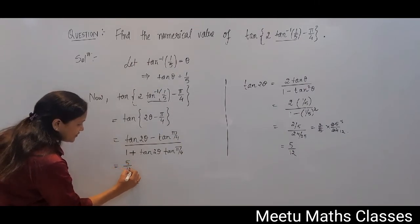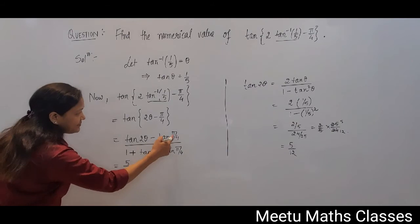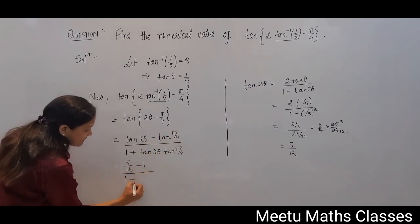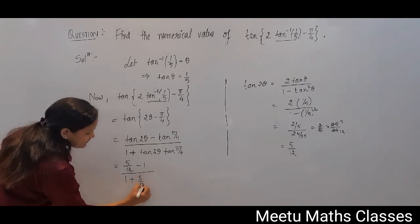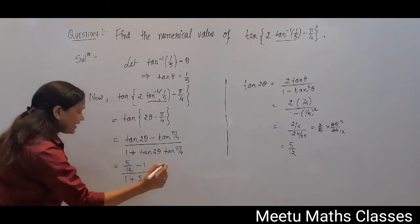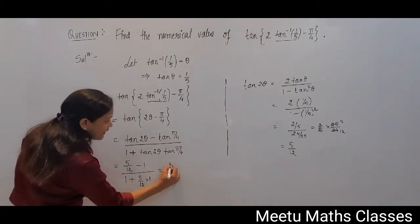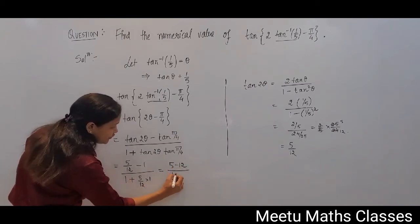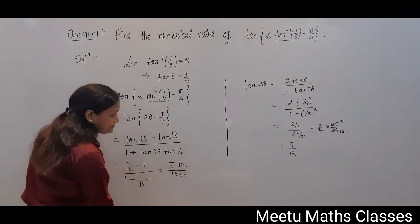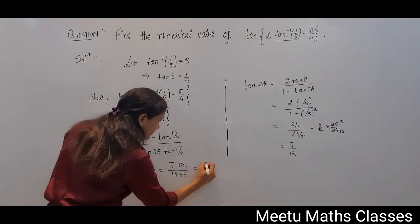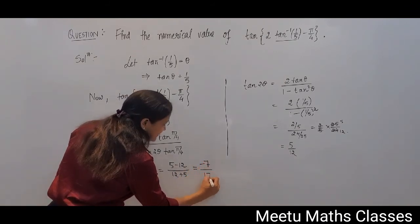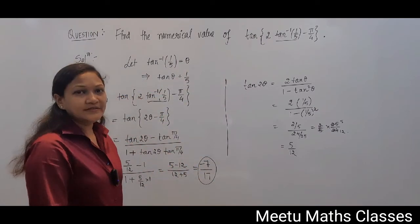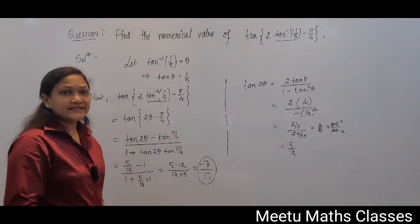So tan 2θ = 5/12 and tan(π/4) = 1. Applying the formula: (5/12 − 1) / (1 + 5/12 × 1) = (5 − 12) / (12 + 5) = −7/17. So the numerical value of the function is −7/17.